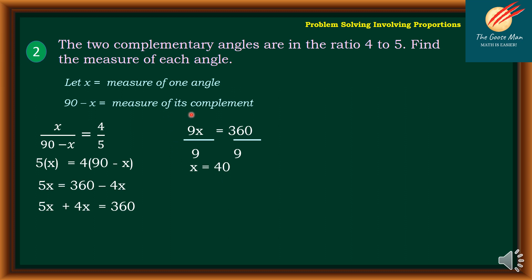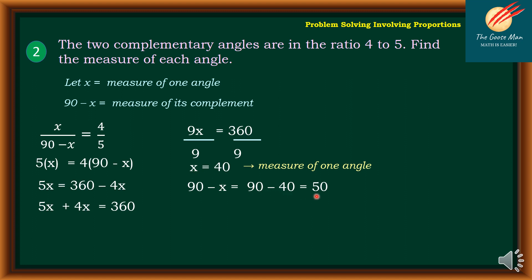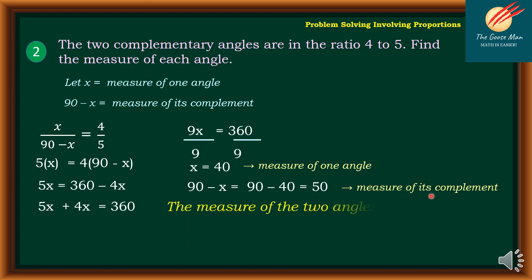Based on my representation, x is the measure of 1 angle. On the other hand, 90 minus x is the measure of its complement. The value of x is equal to 40. So 90 minus 40 equals 50. This is the measure of its complement. Therefore, the measure of the 2 angles are 40 and 50 degrees.